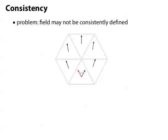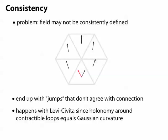For instance, if we use the Levi-Civita connection to construct a vector field, we're going to have a problem because the holonomy around any contractible loop equals the Gaussian curvature over the region bounded by that loop. Unless our surface is completely flat, we are going to get these jumps in our vector field.